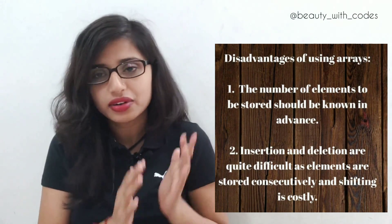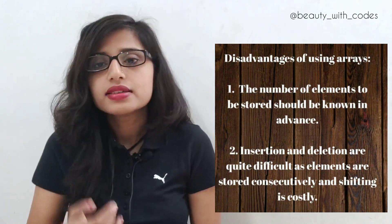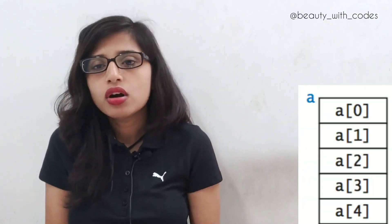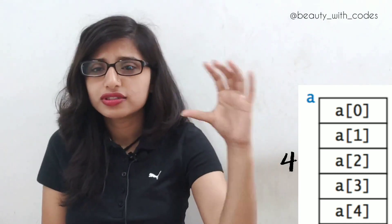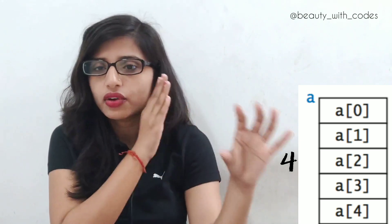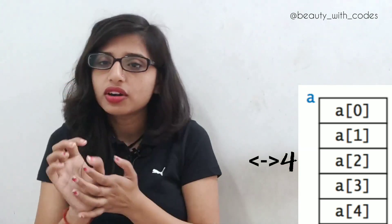If you don't know the index, you have to go for searching algorithms, which I'll discuss later. For example, let's say we have an array of size 5, and you know that 4 is present at the third index. So you don't need to check the first element whether 4 is present there or not — you can just go directly to the third index.